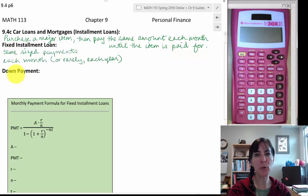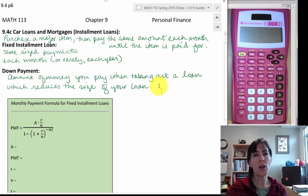I just want you to be familiar with the terminology fixed installment loan. The fixed means that your payment sizes are the same each month, and then installment means you're paying on it over time. So you have the same size payments that you're making each month or rarely it could be each year.